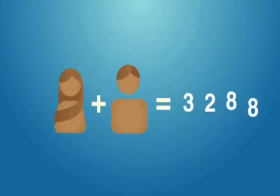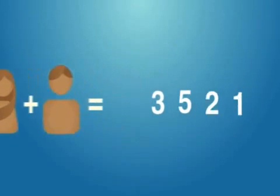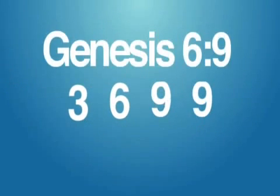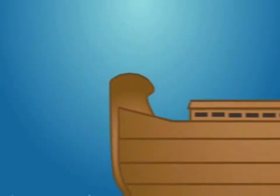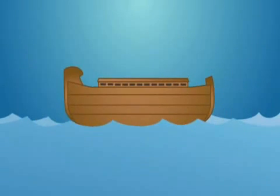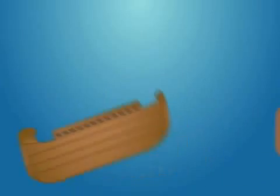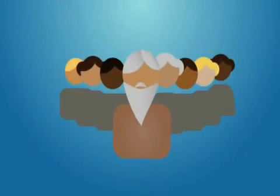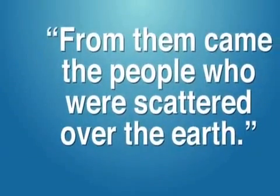Then, their children had children, and those children had children, and so on and so forth for many generations until, according to Genesis 6:9, the world's population was reduced to eight people who were protected inside an ark during a global flood. And those eight people later walked off the ark, and according to Genesis 9:19, from them came the people who were scattered over the earth.